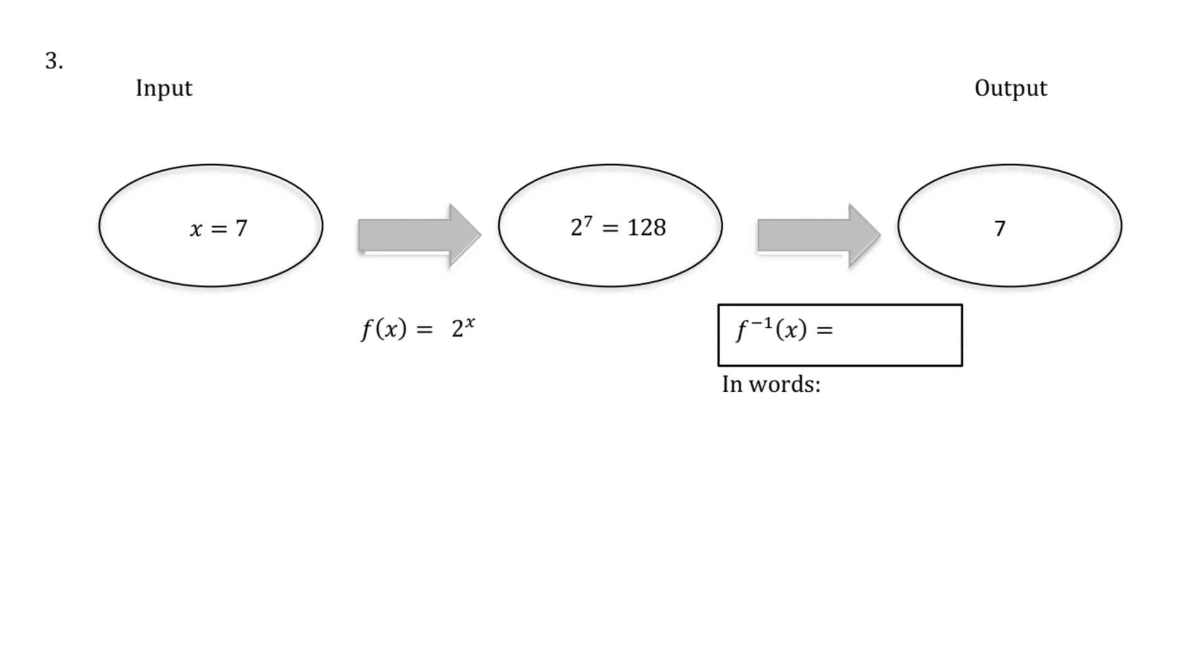Let's go on to number 3. This is a good problem because it connects what we're doing in this task, writing inverse functions, with what we've learned in the rest of the module about logarithms. I have an f(x) which is 2 to the x power, and you can see that 2 to the 7th power is 128.